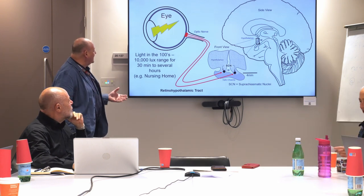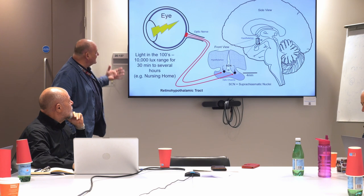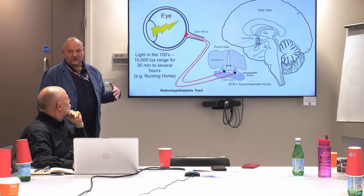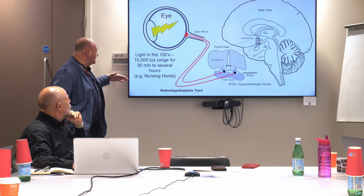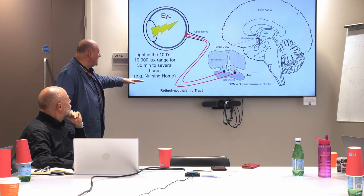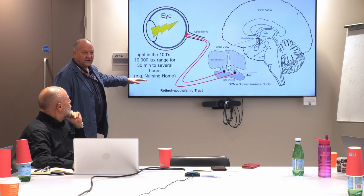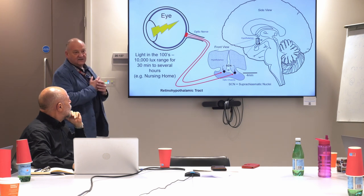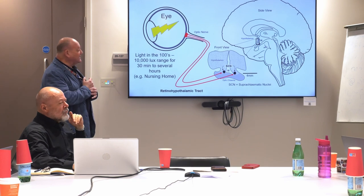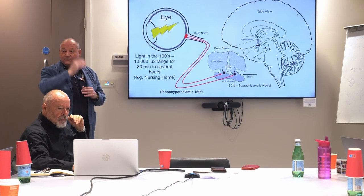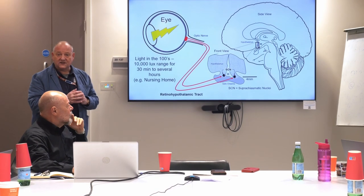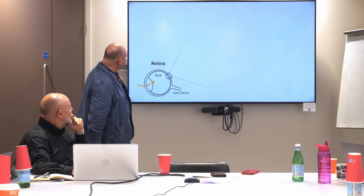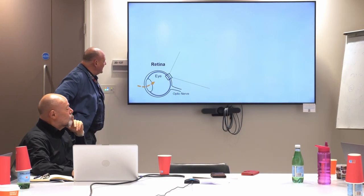Light is detected by the eye, and broadly speaking it's bright light for a relatively long duration that is the most effective stimulus. This is what Als van Someren showed in the nursing home environment: by increasing the light in the nursing home, he was able to stabilize sleep-wake and improve levels of cognition in individuals suffering from mild dementia.